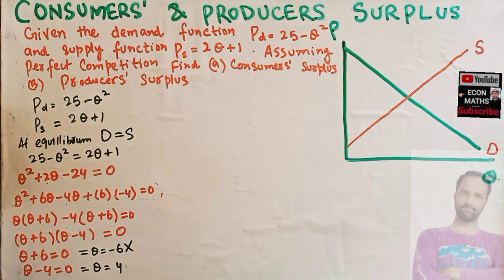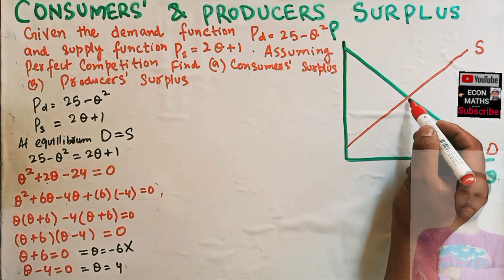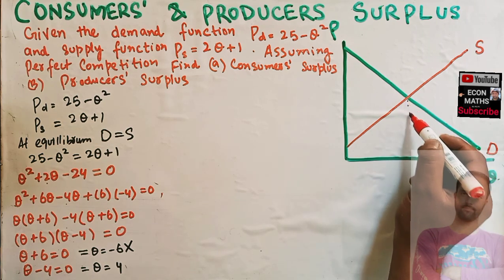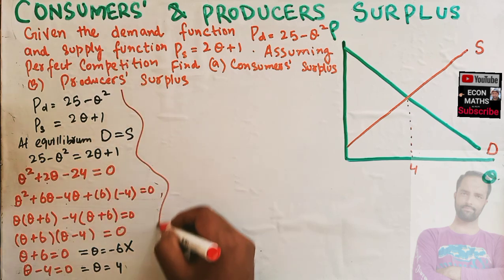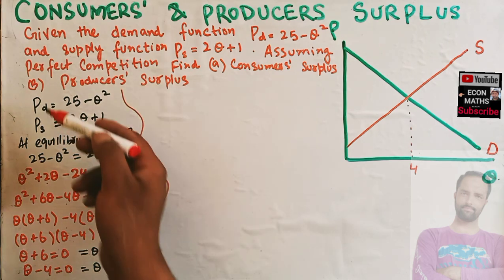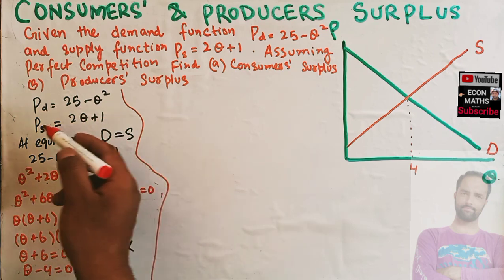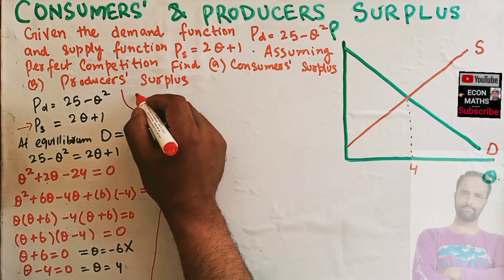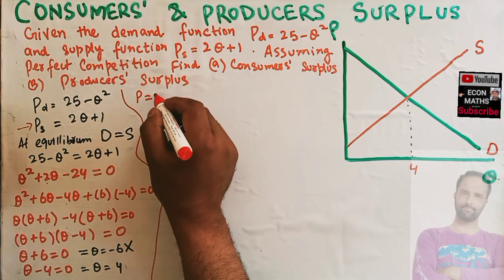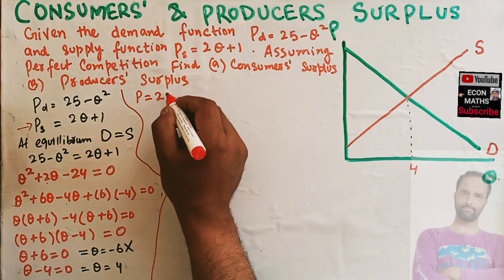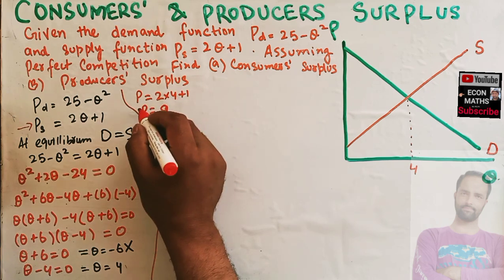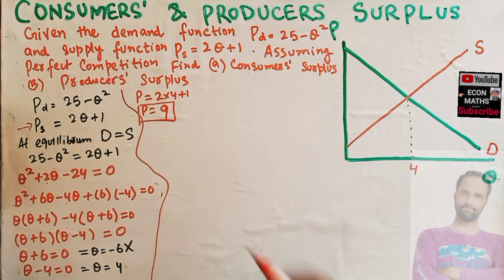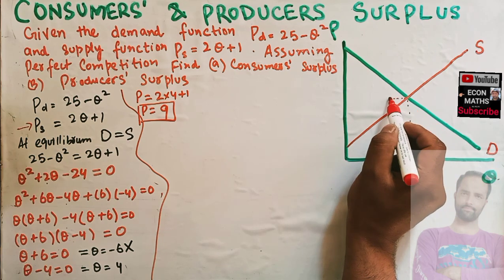At equilibrium, quantity is 4. To find the corresponding equilibrium price, we plug q = 4 into the supply function: p = 2(4) + 1 = 8 + 1 = 9. So we have equilibrium price p = 9 and equilibrium quantity q = 4.